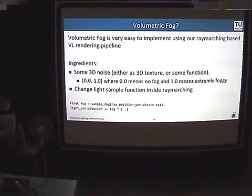Okay, now let's talk about volumetric fog. Volumetric fog is basically just sampling some 3D texture or 3D function which looks like a fog and adding it to the light contribution multiplied by what you got before. And if you do that, you have some nice volumetric fog.